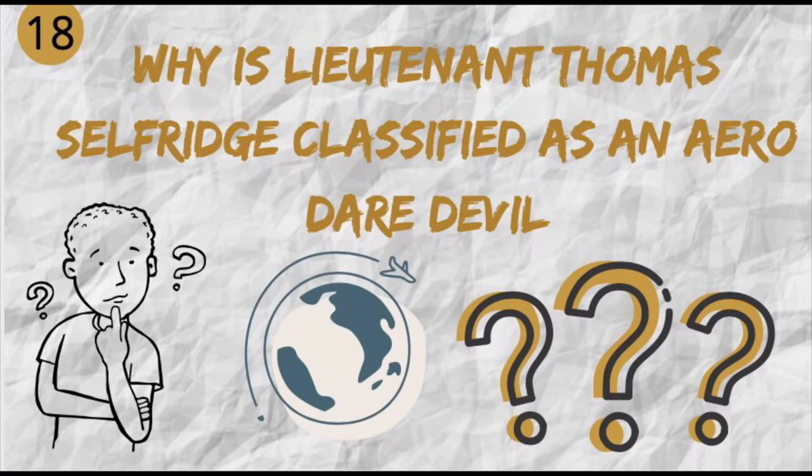After the crash, the officer who succeeded Lieutenant Selfridge to plan another assessment for the Wright Brothers' contract told the brothers: 'In spite of what has just happened, we are more than convinced that you can manufacture an aircraft which is good for us — go ahead with the contract.'